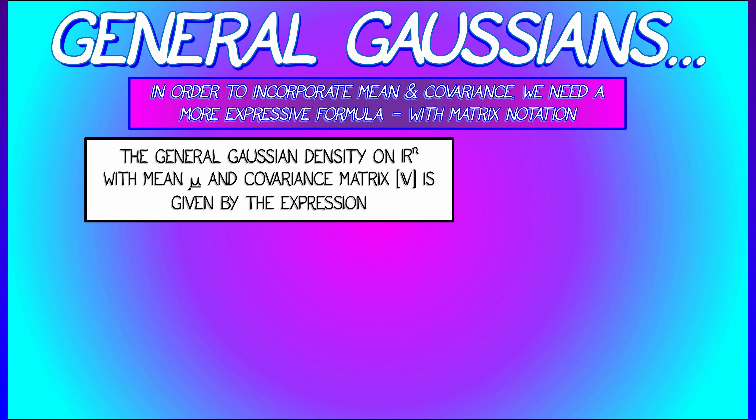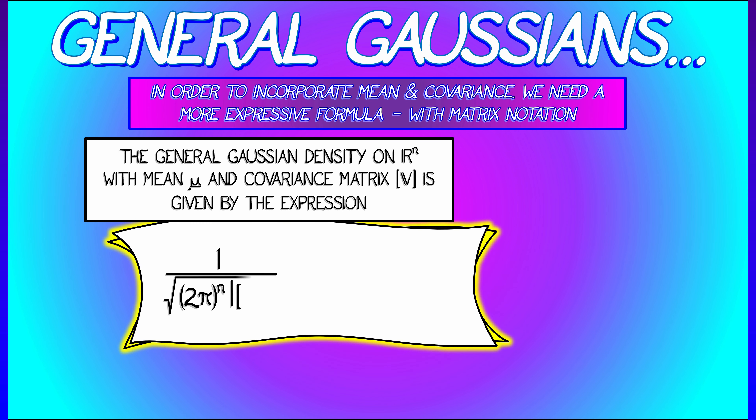Here's the formula for a general Gaussian. The normalization constant is 1 over square root of 2π to the n times the determinant of the covariance matrix. Then we have e to the minus one half (x minus μ) transpose times V inverse times (x minus μ).